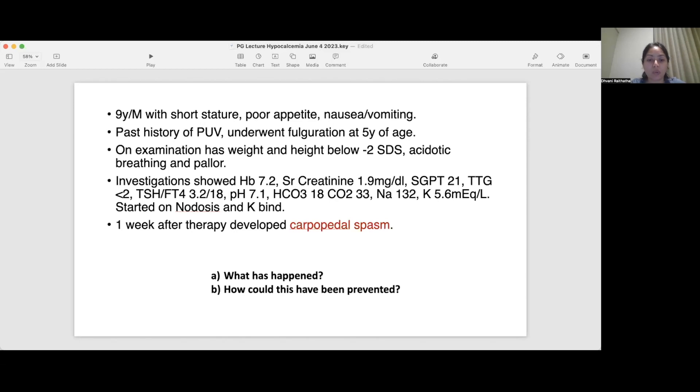What has happened and how could this have been prevented? You have a child who had long-standing low calcium stores but suddenly developed hypocalcemia. The important thing to note is that Nodosis was started. On starting alkali therapy there is a shift of ionic calcium to the bound form because of increased negative charge. When you increase the alkalotic level, the anionic albumin increases and the calcium level goes down. Dr. Bharani said we should have added calcitriol at that point of time. That's a very important point.